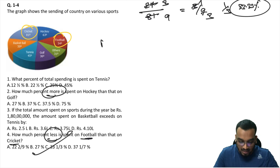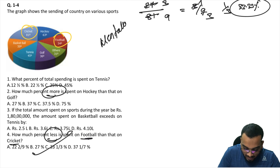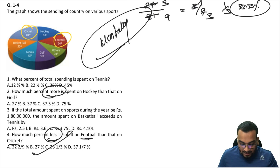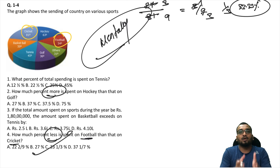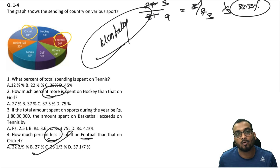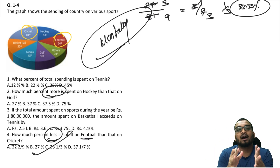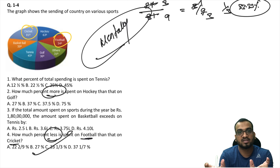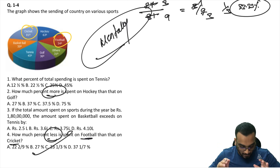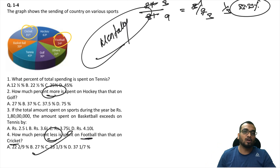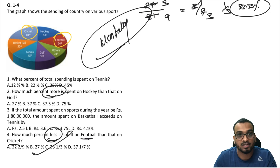If you have these calculations, you can actually do this mentally. Keep this setup on your desktop since the exam is online, and you can literally solve these mentally. You just need to know one rule: 360 degrees = 100%, 3.6 degrees = 1%, 36 degrees = 10%. If you know these benchmarks, you can play with whole numbers and do speed calculations. That's it from my side.